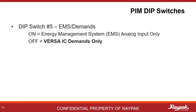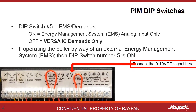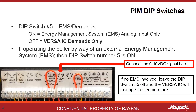PIM dip switch number five needs to be on to engage dip switches number two and number six, as they all support energy management systems. When driving the boiler from an external controller like an energy management system, also known as a building management system, turn on dip switch number five. The energy management system will connect up to ports 13 and 14 on the low voltage panel. If not driving from an energy management system, leave dip switch number five off and the Versa system will drive the boiler.